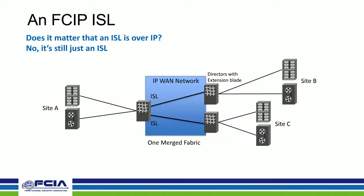Here's a graphical representation: we have a SAN-to-SAN connection — in this case, one big merged SAN. You can use Fiber Channel routing to separate this, but we won't get into that in this webinar. Because these are ISLs connecting together, it merges your fabric at each location. All we're doing is taking those ISLs and putting them through IP, which is FCIP.